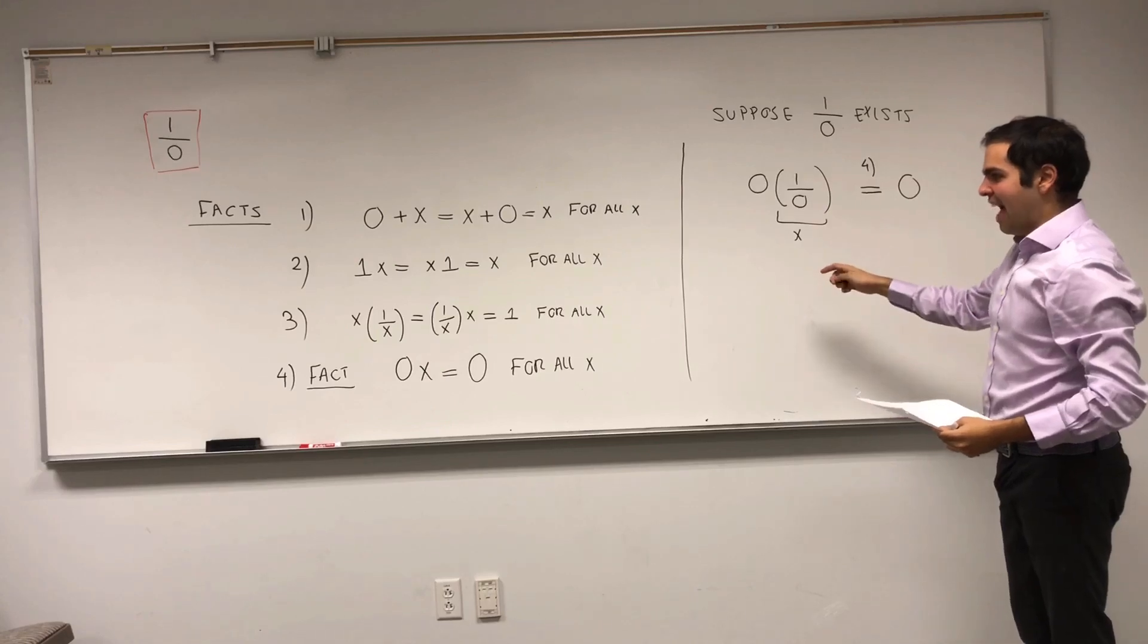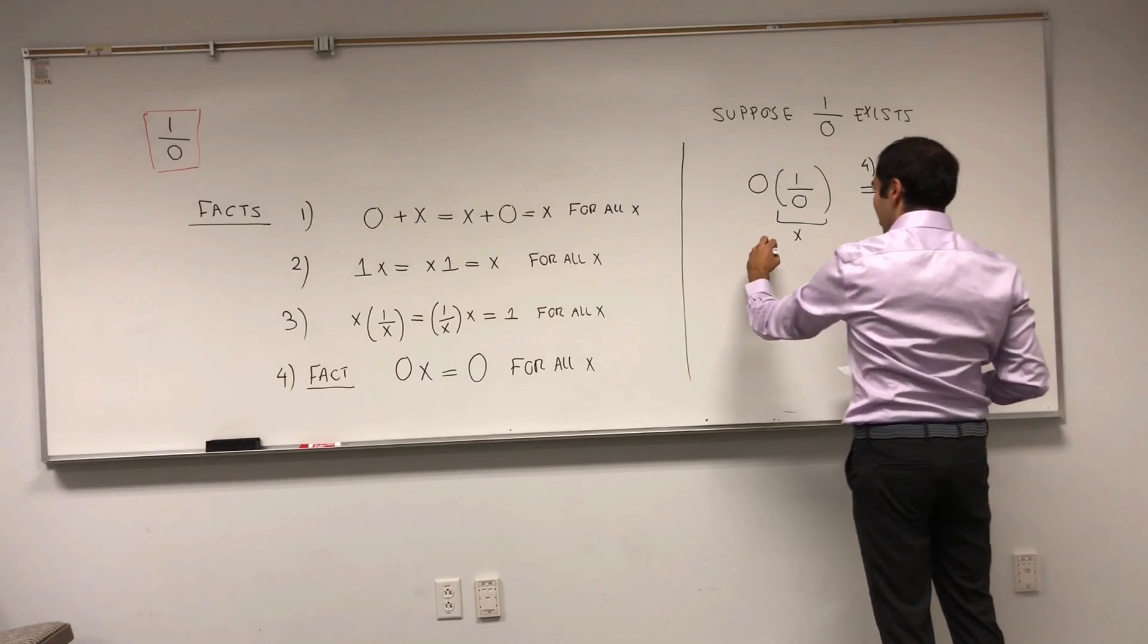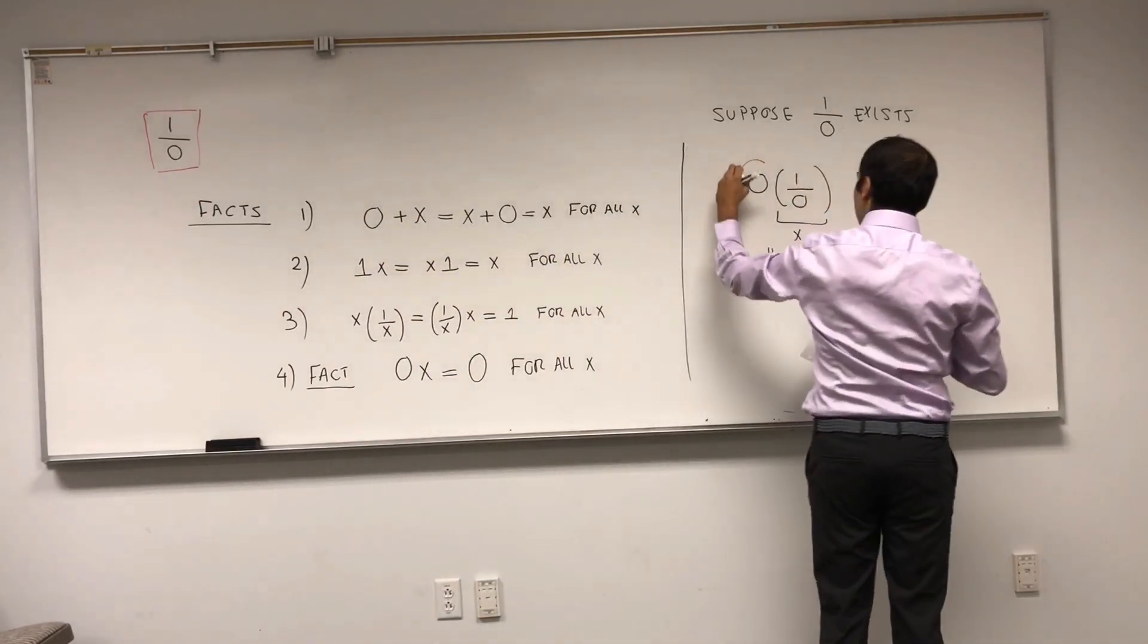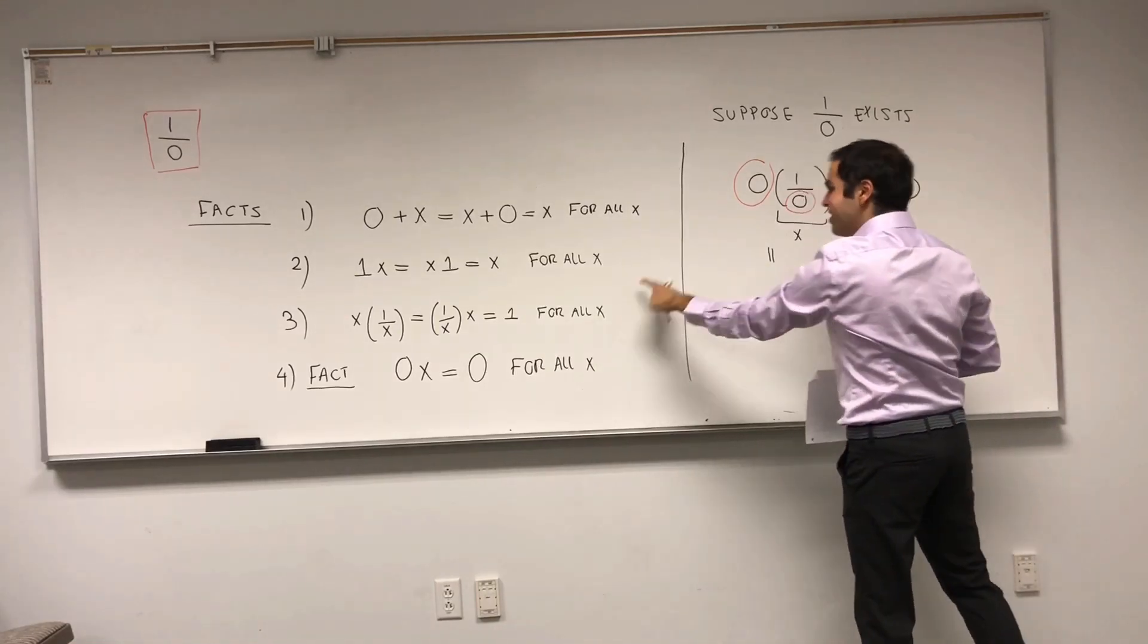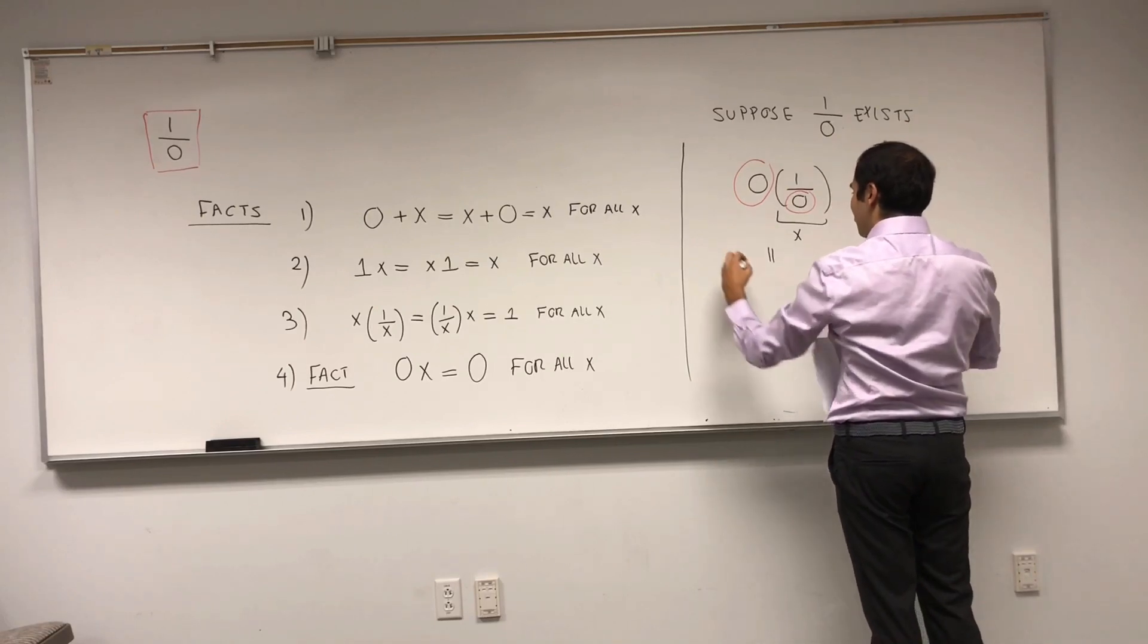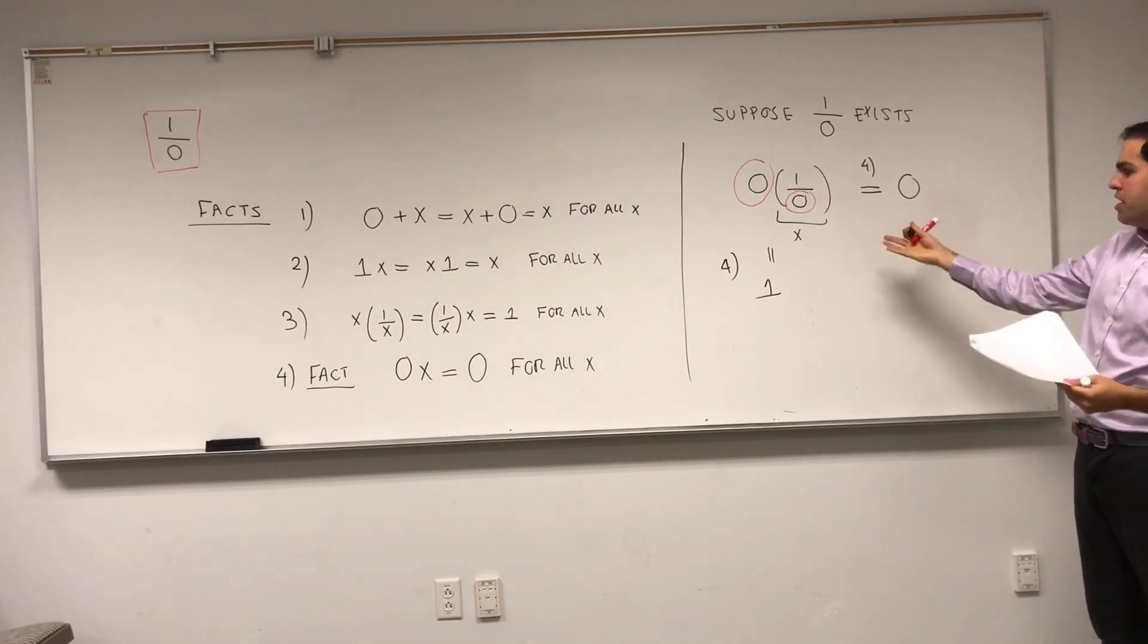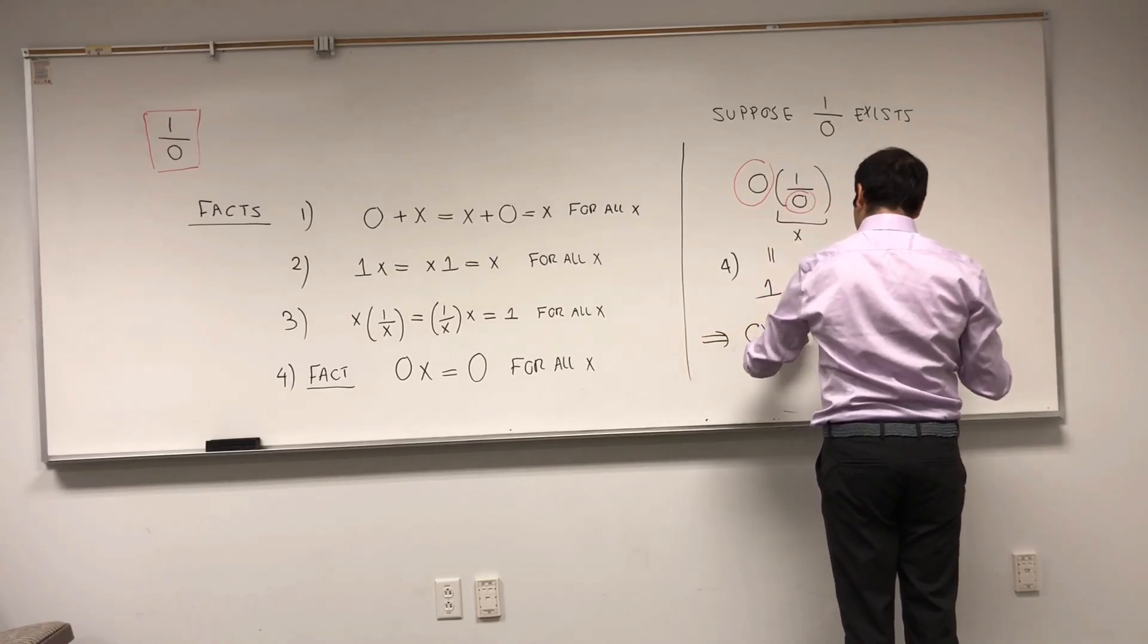On the other hand, now let's take the fact that you have 1 over something. But, because you're doing 0 times 1 over 0, times 1 over 0, this property 3 says that the 0s cancel out. So, by fact 3, you get 1. And, therefore, 0 equals to 1.